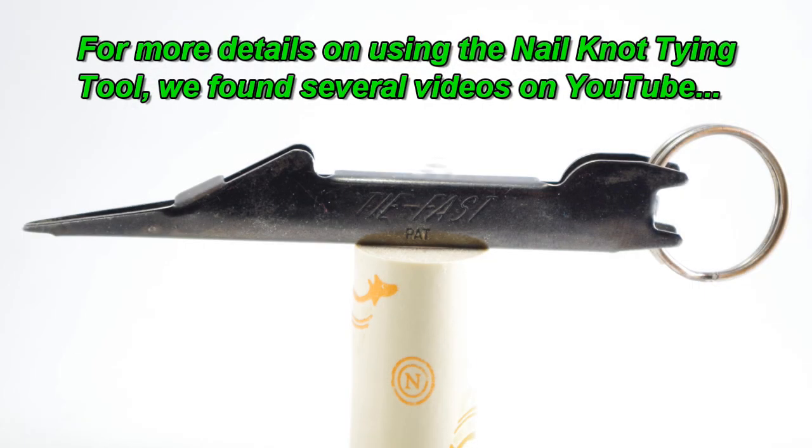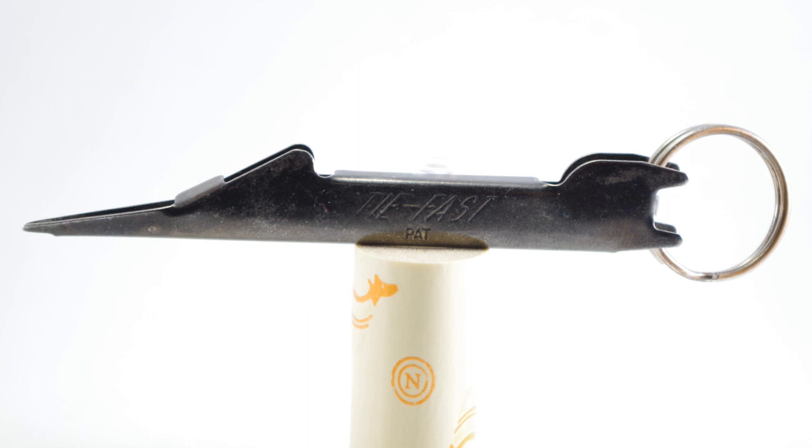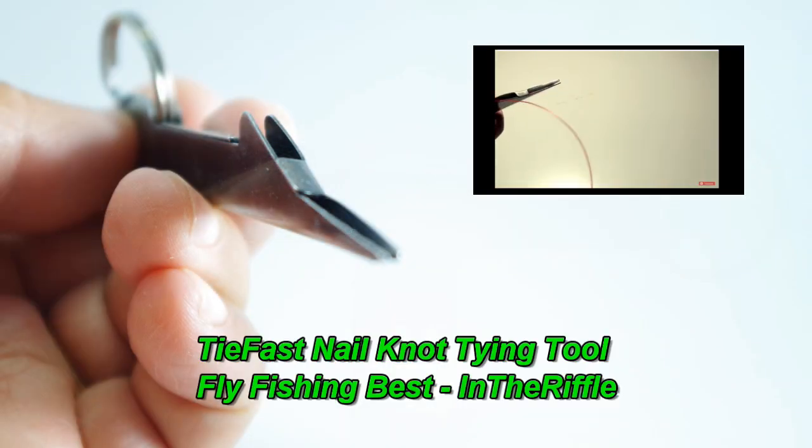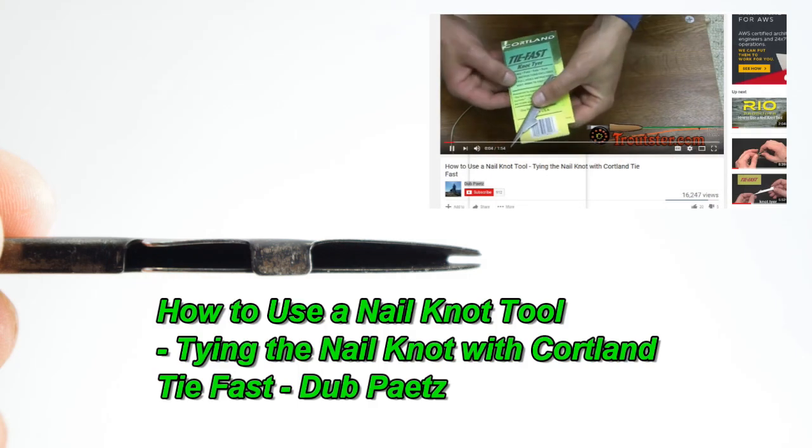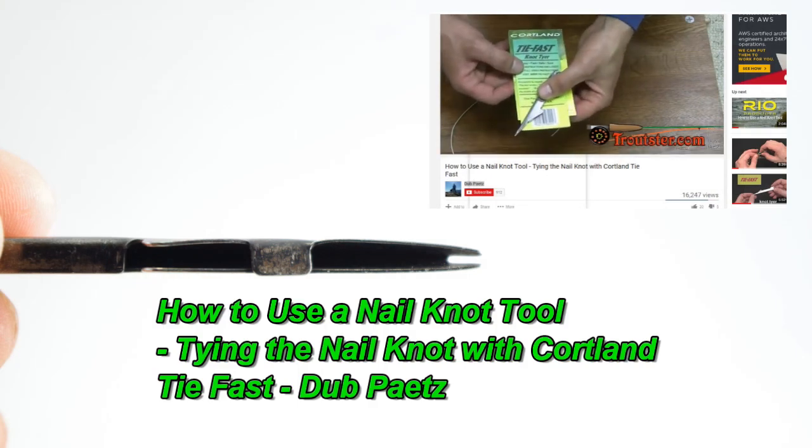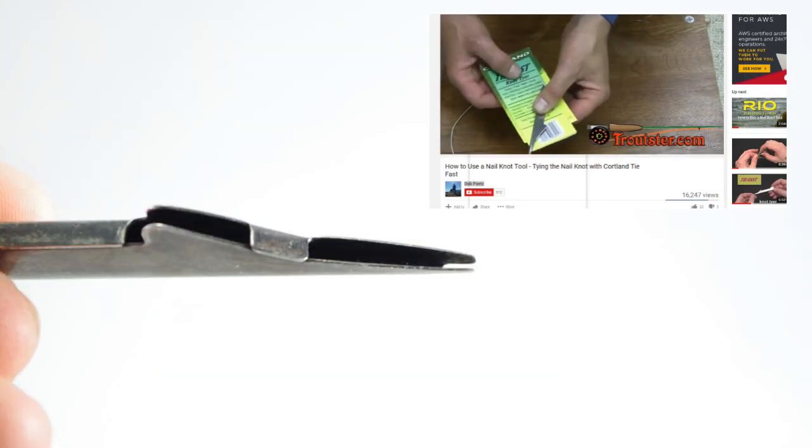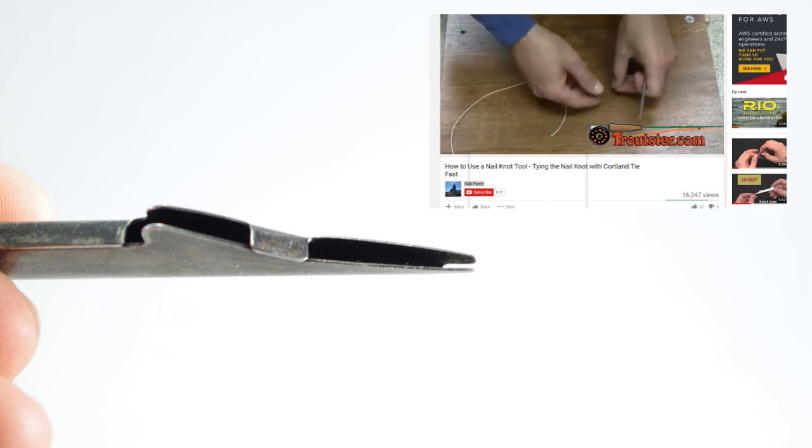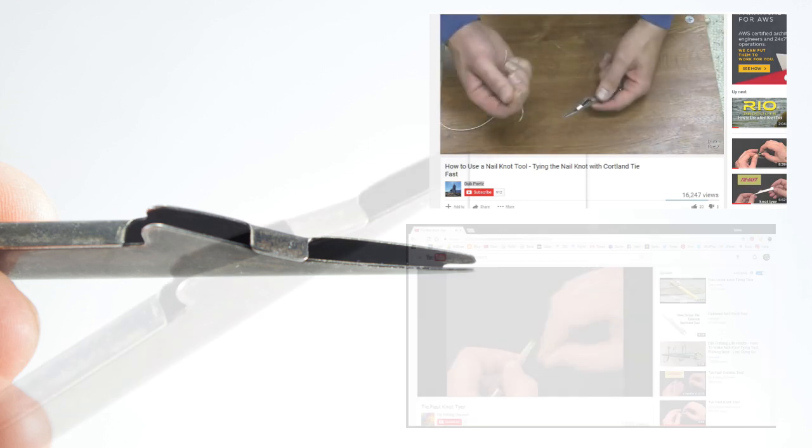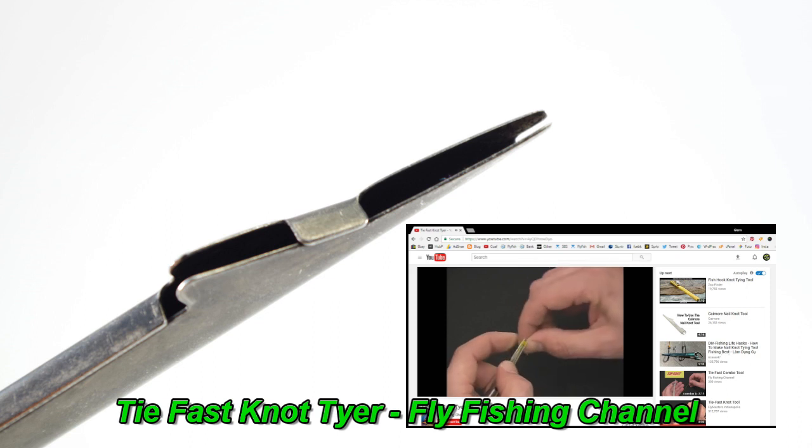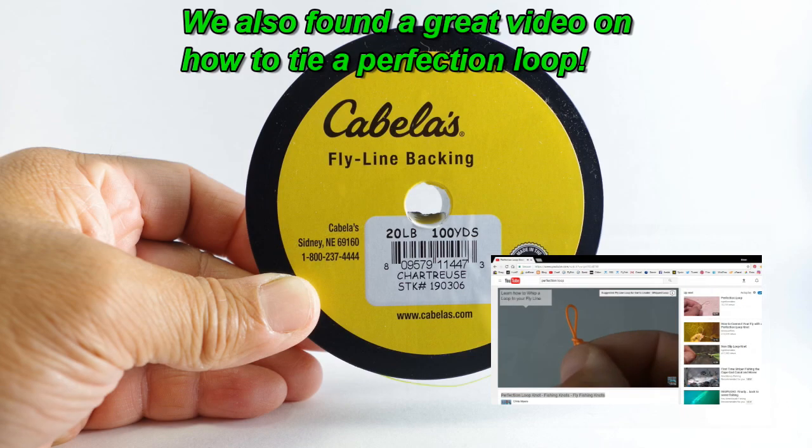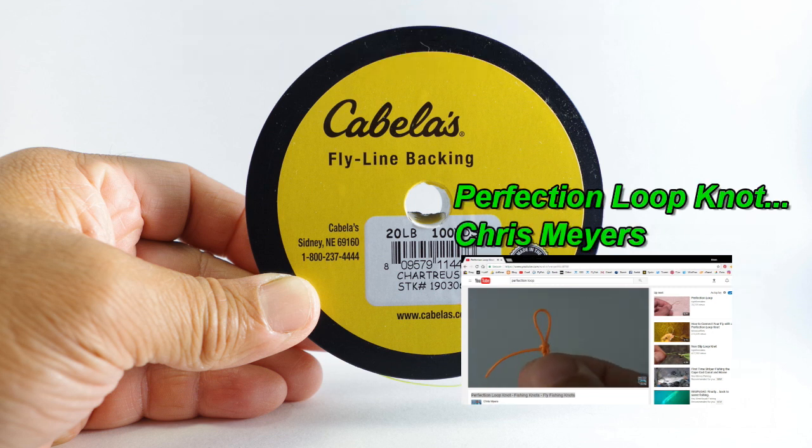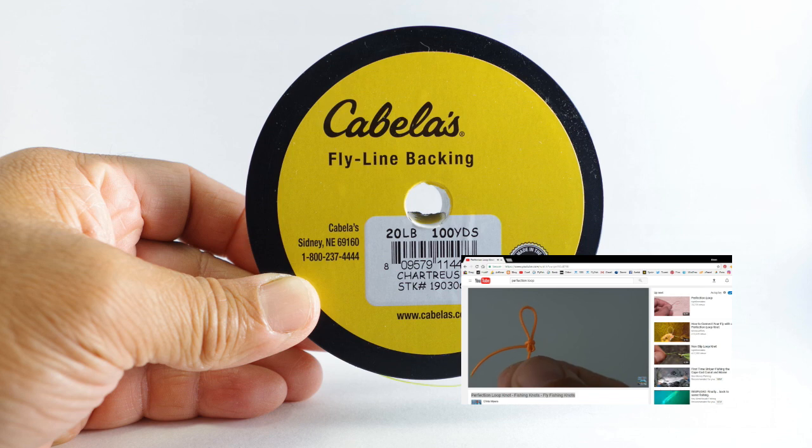Also, we noticed a number of YouTube videos that are available to show how to use the nail knot tying tool. And we're going to tie this on to the tip of our fly line. The Cortland TieFast Knot Tyer to tie a nail knot. Take the thick end and hold the wrap securely with your forefinger. We also found the YouTube video showing how to tie the perfection loop. There's a quick and easy perfection loop for using in the end of your leaders.